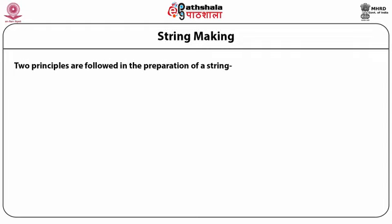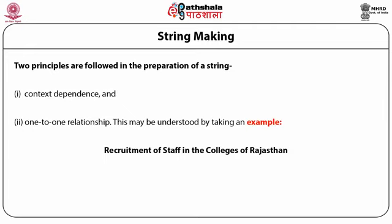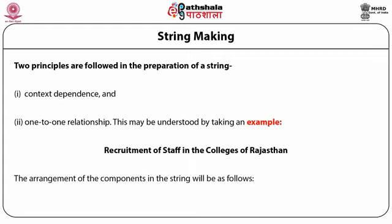String making. Two principles are followed in the preparation of a string: first, context-dependence, and second, one-to-one relationship. This may be understood by taking an example: 'Recruitment of Staff in the Colleges of Rajasthan.' The component terms are Recruitment, Staff, College, Rajasthan. We can say there is a state Rajasthan which has colleges, which have staff, whose recruitment is the theme of the document. The arrangement of the components in the string will be: Rajasthan.College.Staff.Recruitment — each term is directly related to the next term in the string.